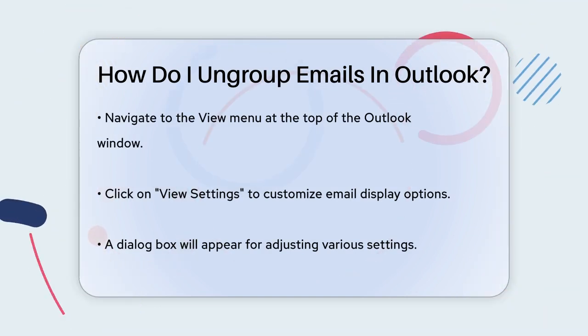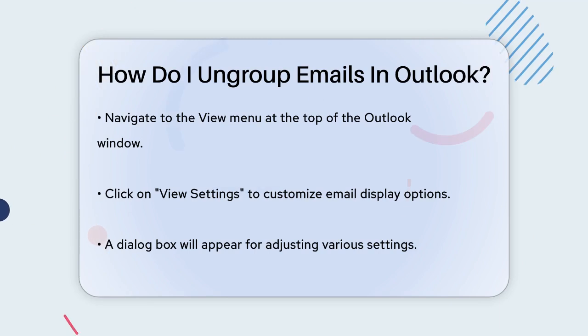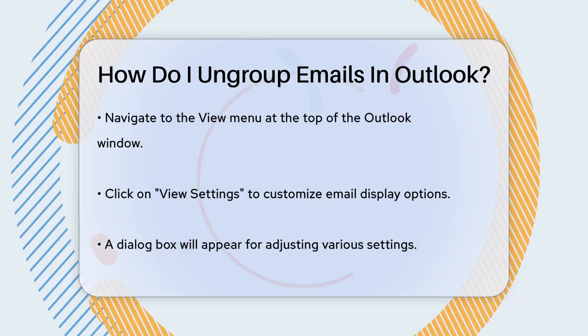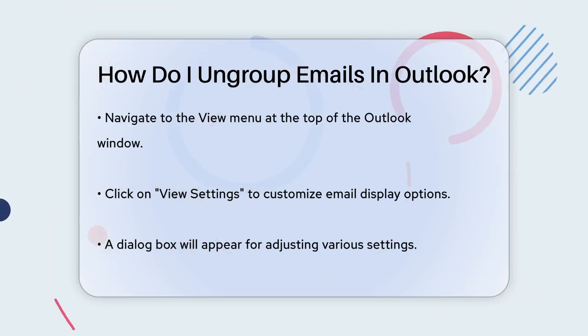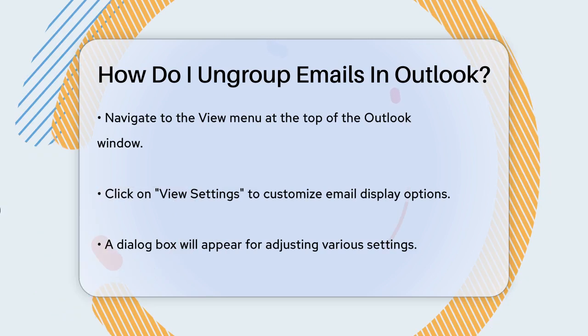First, you need to navigate to the View menu at the top of your Outlook window. This menu is where you can customize how your emails are displayed.